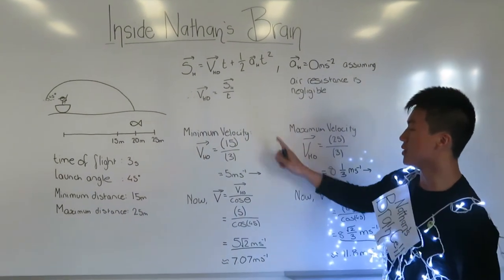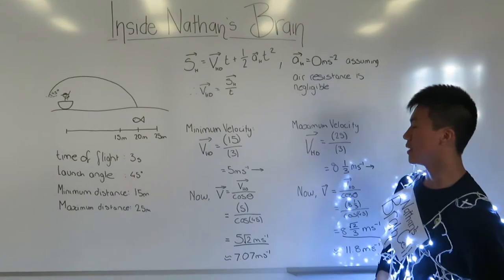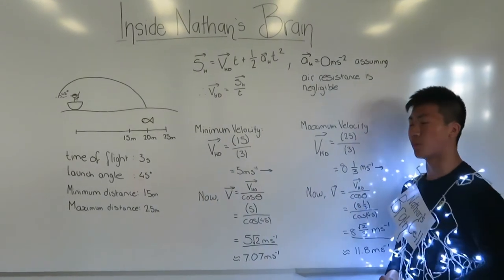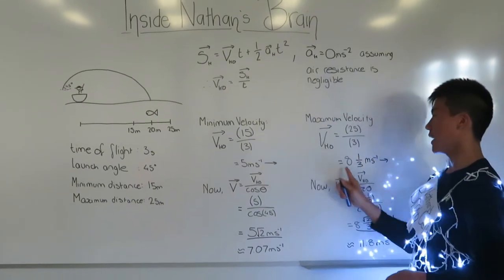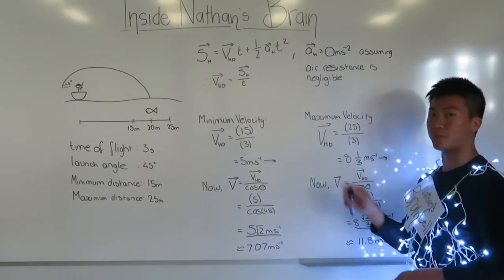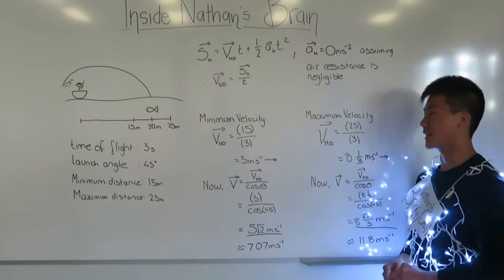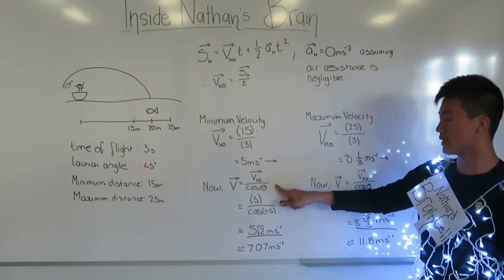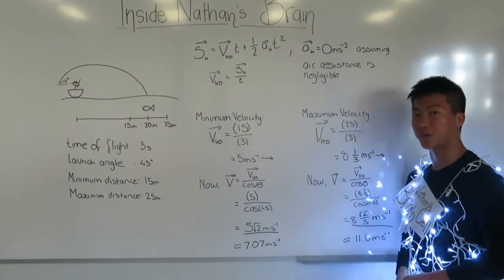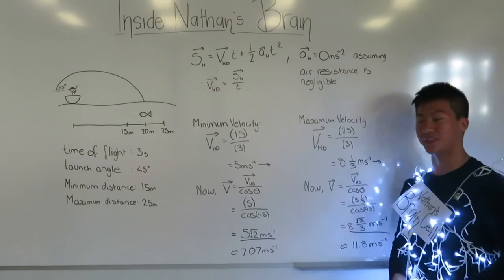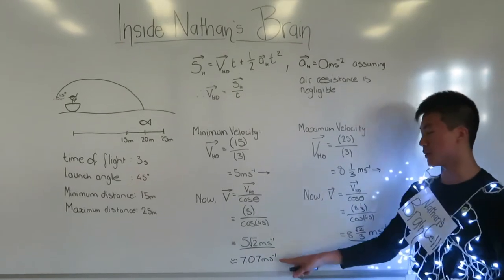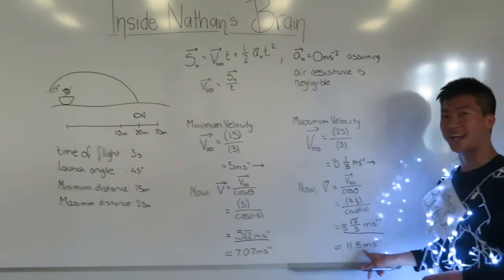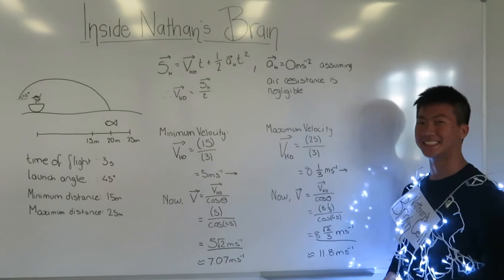This formula gives us that the minimum and maximum horizontal velocity components will be 5 meters per second and 8⅓ meters per second respectively. Using that, the range of velocity he'll need to cast at is between 7.07 meters per second and 11.8 meters per second.